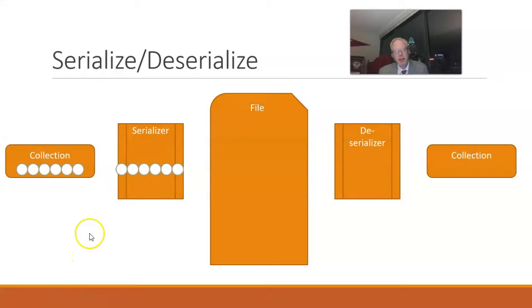So we have our serializer, which is going to take these objects and convert them to zeros and ones, save those zeros and ones in a file. And as we saw in a previous animation, those zeros and ones could map to characters, in which case it's human readable, or they might not, in which case it's not human readable.